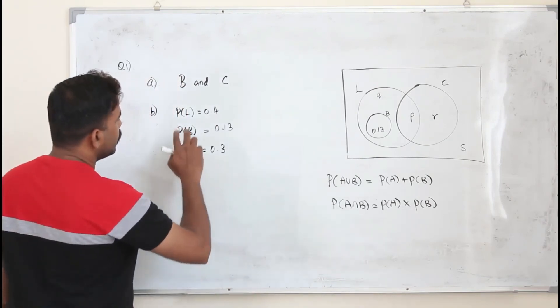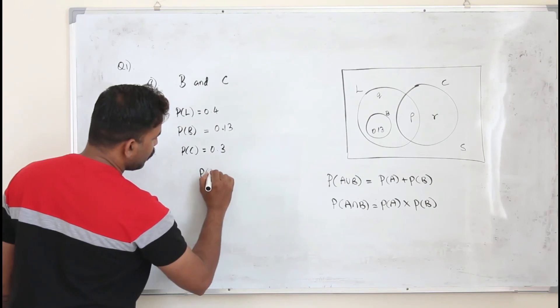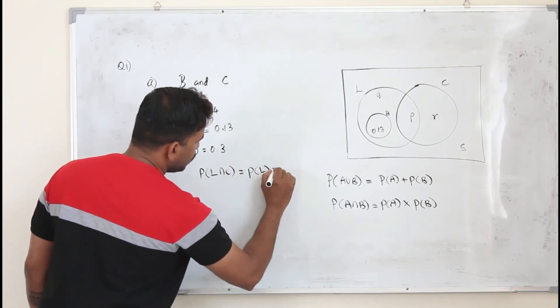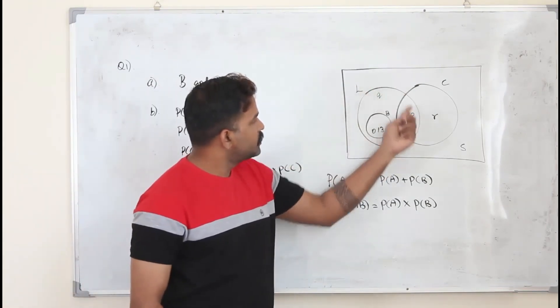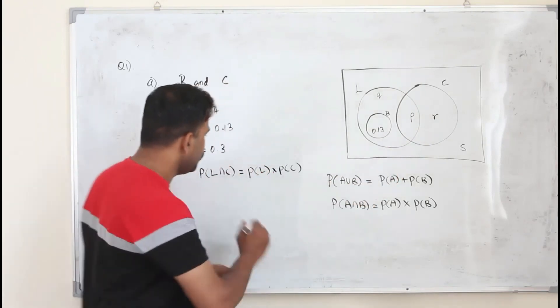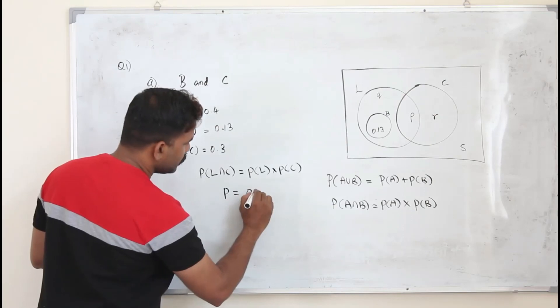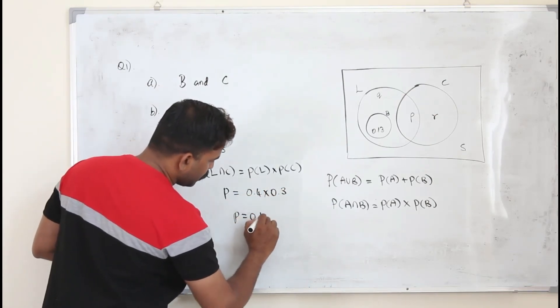So here, it's given L and C are independent events. So you can write P of L intersection C is P of L times P of C. By looking at the Venn diagram, you can see L intersection C is P. Take the value of P of L and P of C. So your P is 0.1.